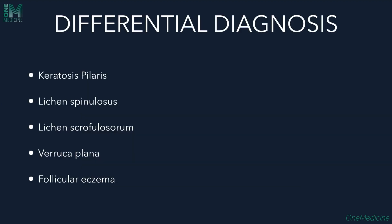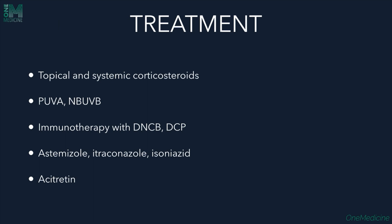Differential diagnosis of lichen nitidus includes keratosis pilaris, lichen spinulosis, lichen scrofulosorum, verruca plana (flat warts), and follicular eczema. Treatment includes topical or systemic corticosteroids, PUVA, narrowband UVB, immunotherapy with DNCB or DCP, astemizole, itraconazole, isoniazid, and acitretin — especially acitretin in palmoplantar cases.